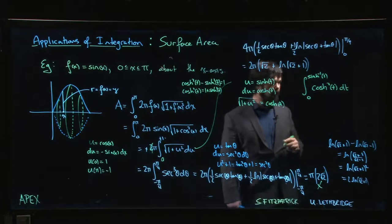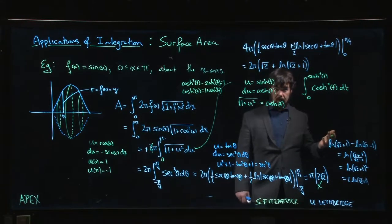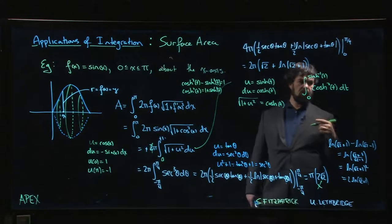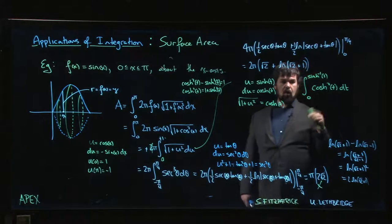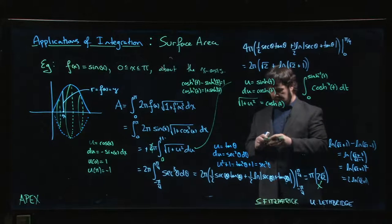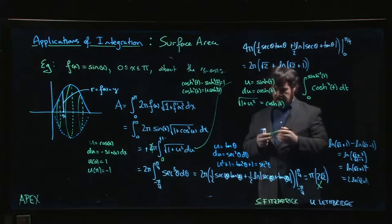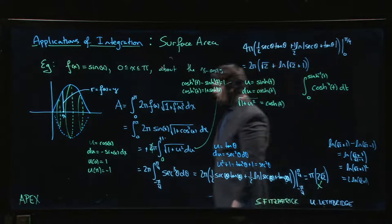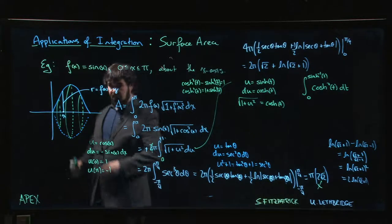To finish this off, there are two things you look up because nobody remembers the hyperbolic stuff. Look up the power reduction formula for hyperbolic cosine - it's going to look a lot like the power reduction formula for regular cosine.